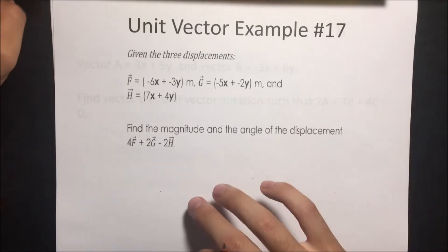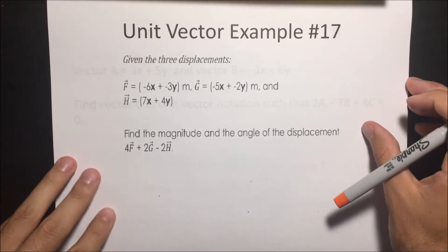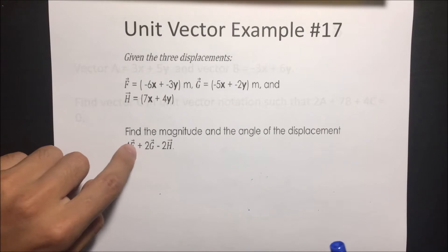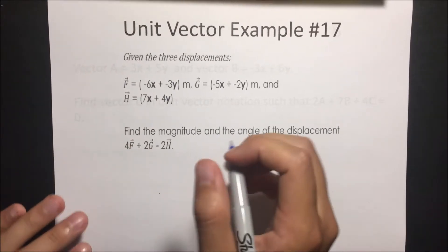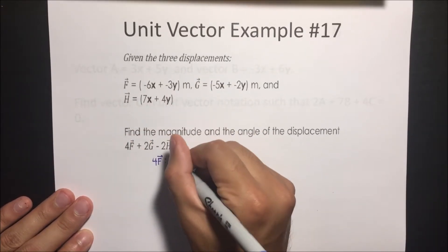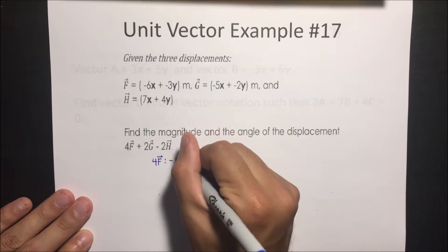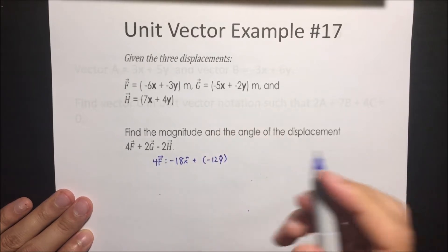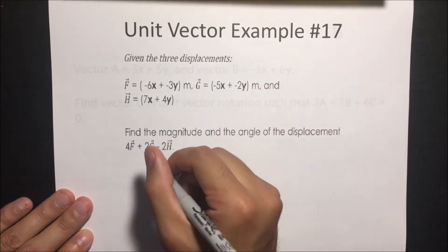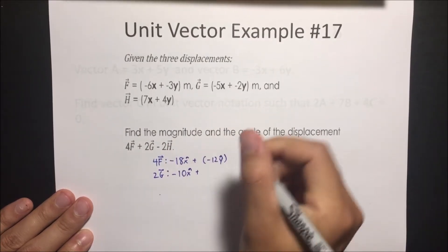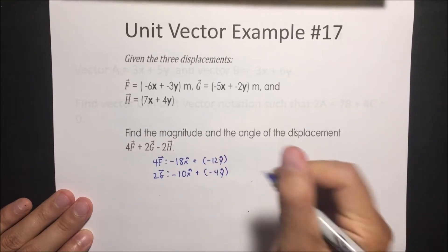Next problem, number 17. Given the three displacements, find the magnitude and the angle of the displacement. It's a little harder because we have three vectors, but it's pretty much the same thing. 4F is going to be negative 18 in the x direction plus negative 12 in the y direction. 2G is going to be negative 10 in the x direction plus negative 4 in the y direction.